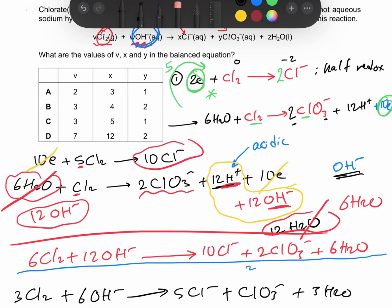This question is asking me about x, y, and v. The v represents the coefficient of Cl₂, which is 3, so we could have B or C. The coefficient of x represents Cl⁻, which is 5. Basically the answer is C because x is represented by 5, v is represented by 3, and y is represented by ClO₃⁻, which is 1. The answer here is C.